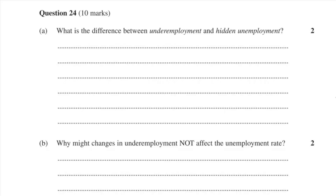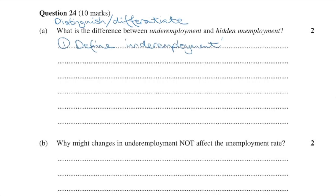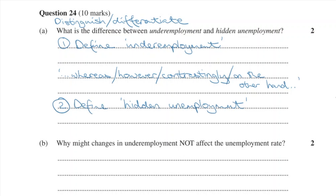Students sometimes get so caught up studying unemployment that they forget to study underemployment in detail. Here are some HSC short answer questions to distinguish between the two concepts. 2012's question 24A is essentially a distinguish or differentiate question. A simple approach is to provide definitions of both with a conjunction word in between. For example: underemployment is the situation where a worker working less than full-time hours is actively seeking and available for more hours, whereas hidden unemployment is when the person is not actively seeking and therefore does not fall under the official definition of unemployment.